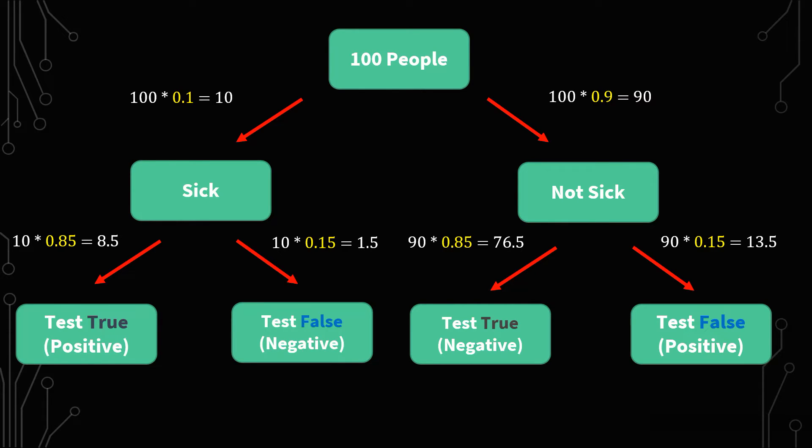And we know that the test is 85% accurate, which means that 15% of the time, it's not. So now we go down a level and we see 10 times 0.85 equals 8.5, which means of the 10 that are sick, 8.5 have a true test of positive. So on the other side of that coin, we have 10 times 0.15. 1.5 people who are sick test negative, yet they are in fact sick. So that is the false negative aspect here.